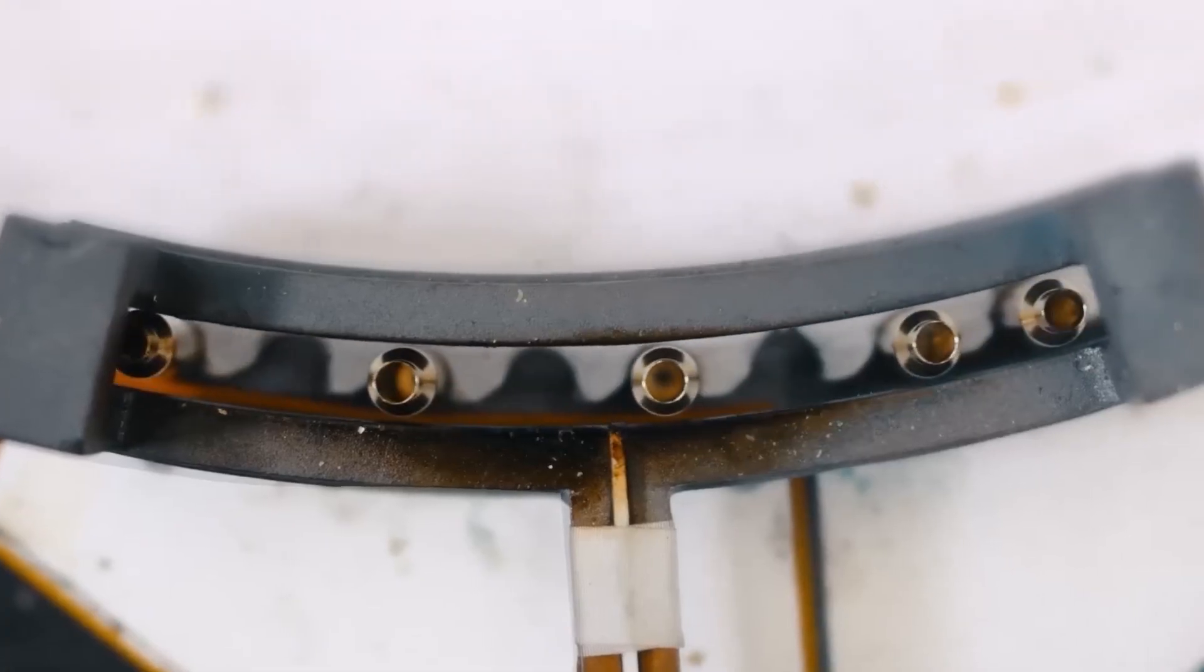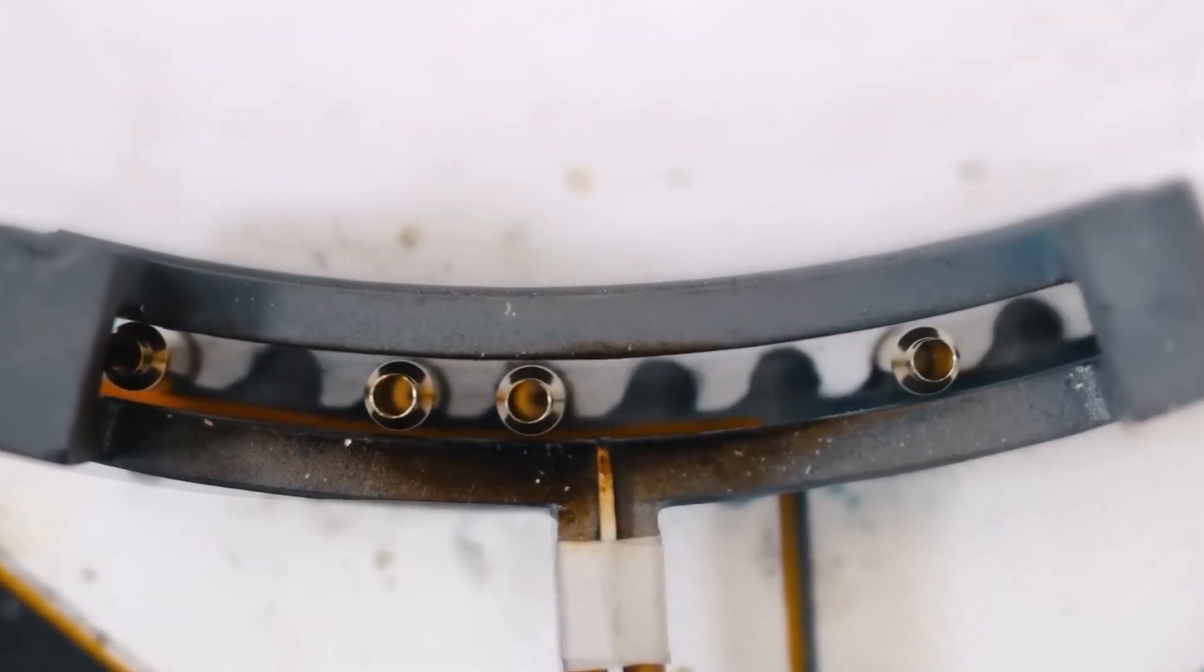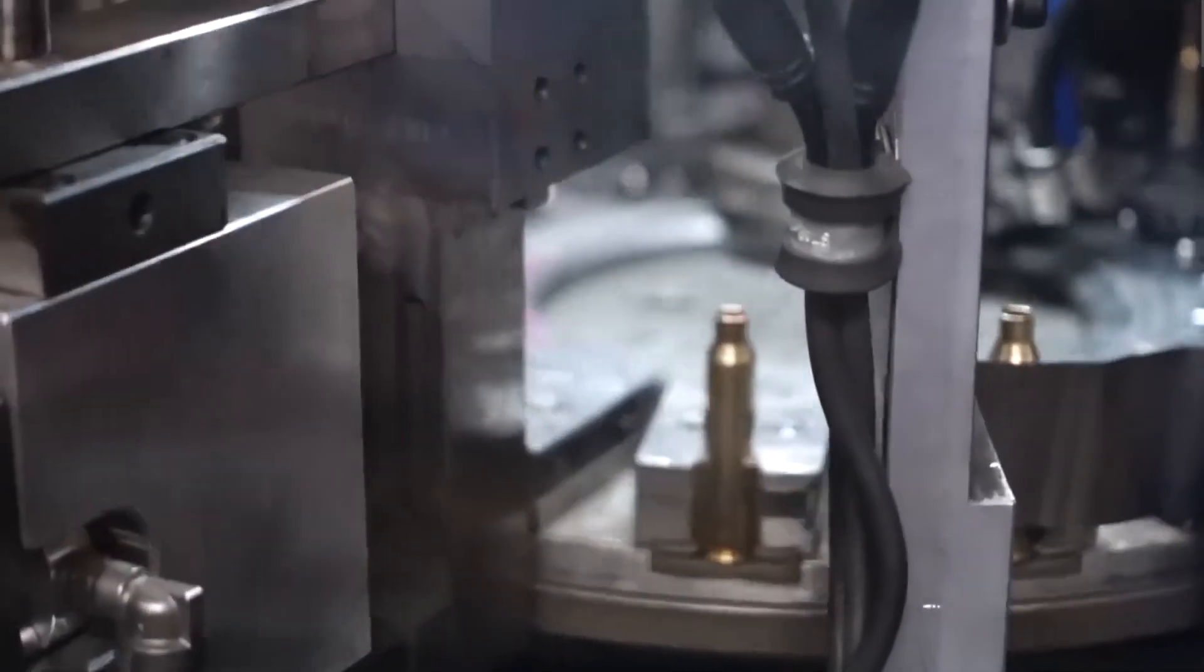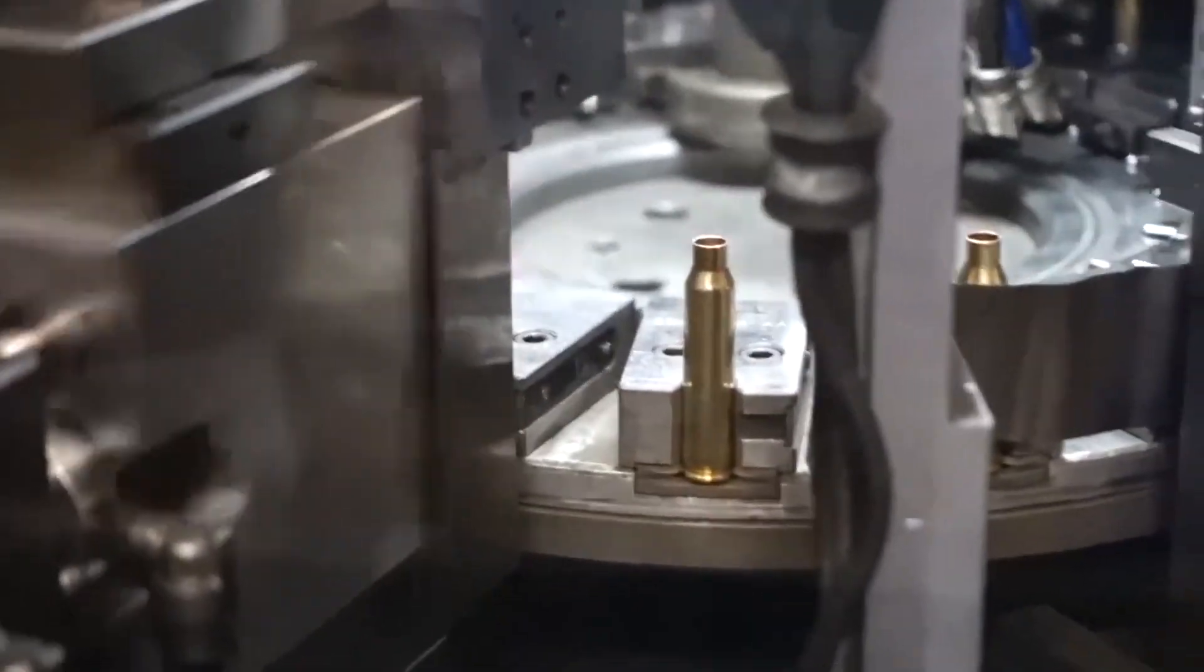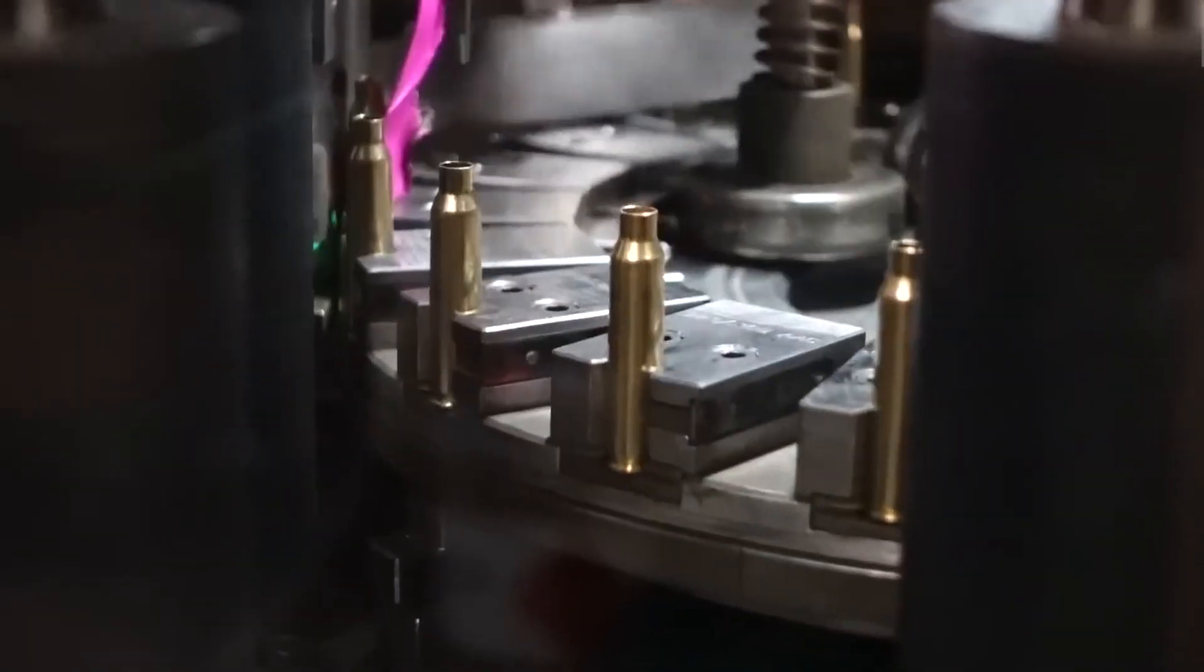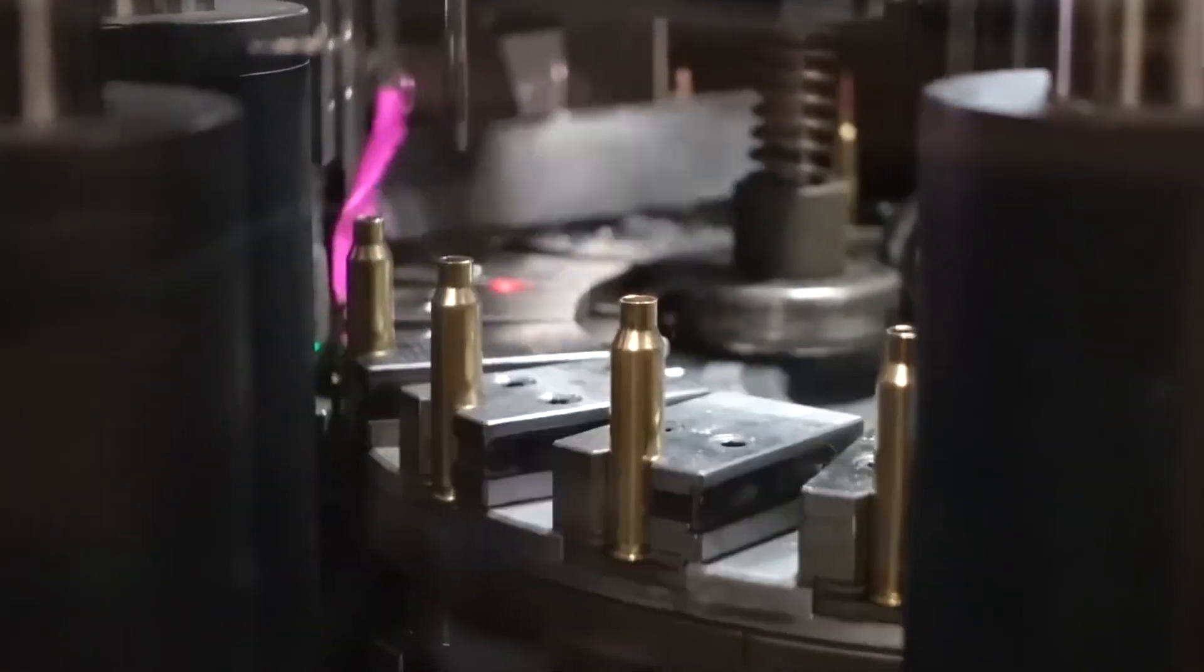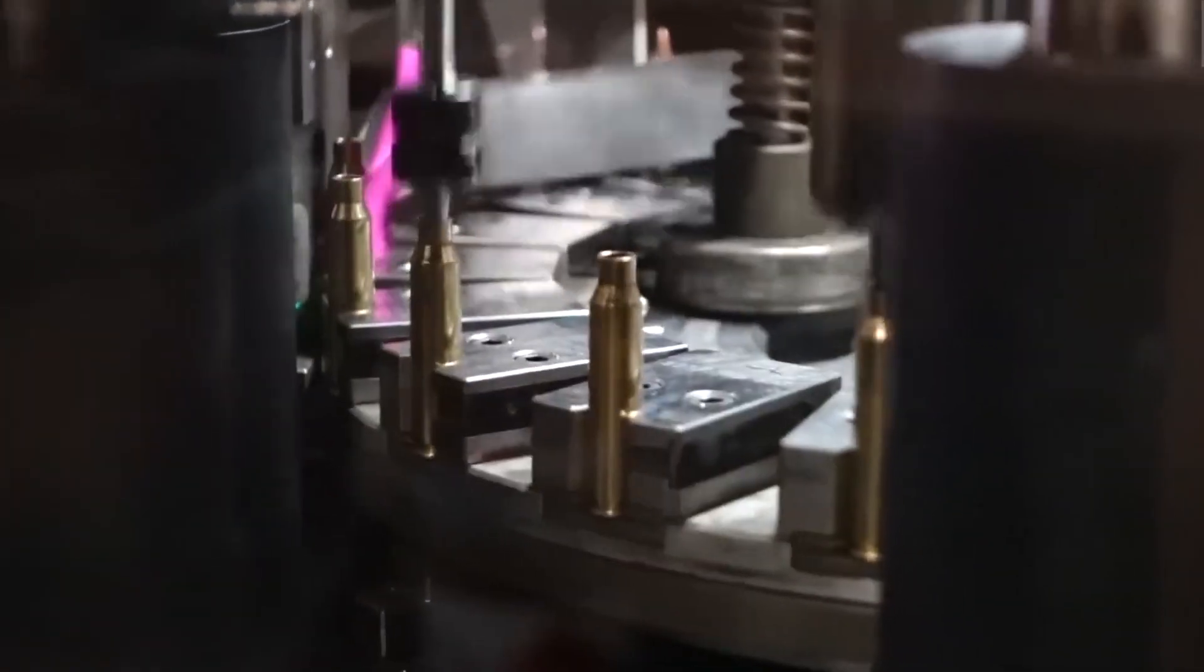With all components ready, the assembly phase brings everything together into finished ammunition. This typically happens on progressive loading machines that perform multiple operations with each cycle. The process begins with empty cases being fed into the machine, where the spent primer pocket is cleaned and a new primer seated.